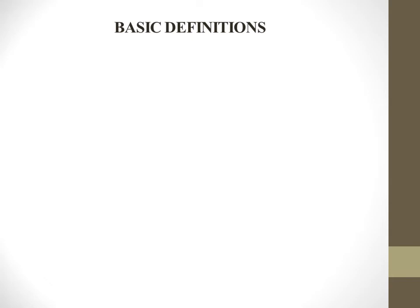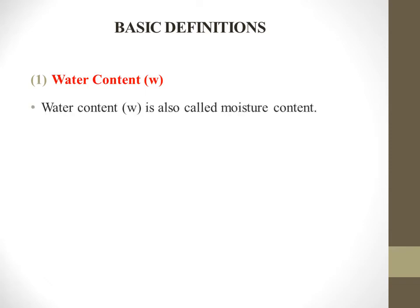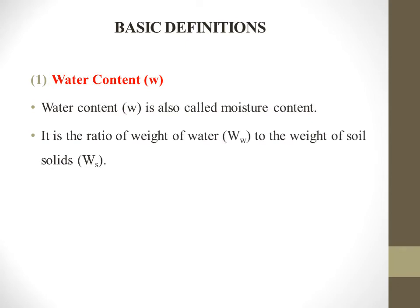Let's see what are the basic definitions used in Geotechnical Engineering. The first important one is water content, denoted by W. Water content is also called moisture content. It is the ratio of weight of water to the weight of soil solids, expressed as W = WW / WS, where W is greater than or equal to zero. WW is the weight of water and WS is the weight of soil solids.